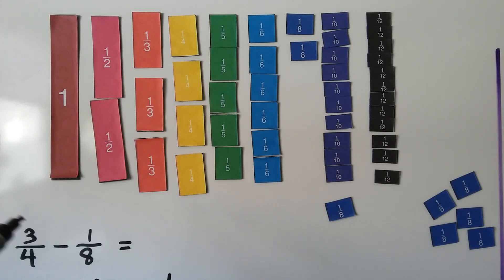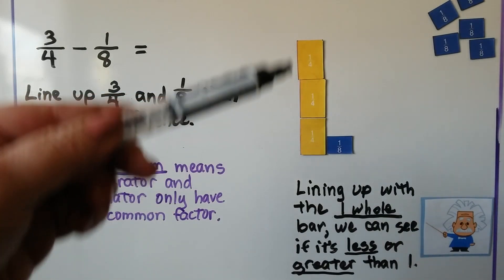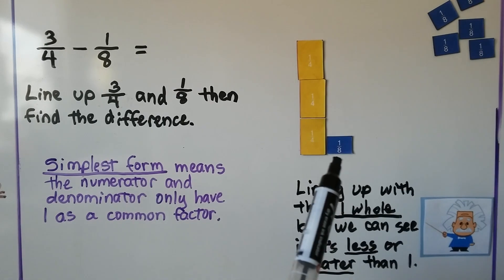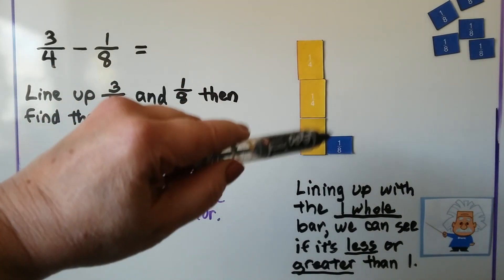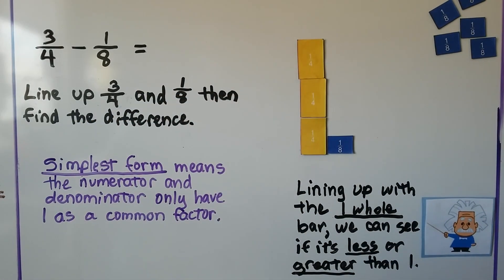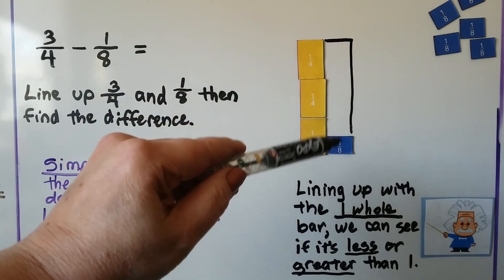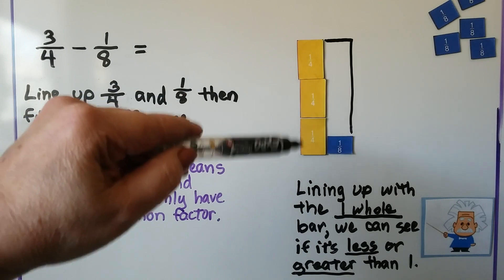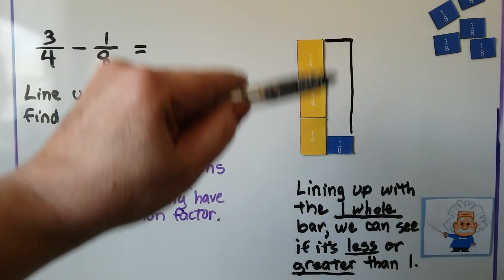We can model three fourths minus one eighth. What we do is take three one-fourth pieces — three fourths — and we line it up next to a one-eighth piece, put it right on the side. That means we're looking for this section right here to make it equal. We need to find the fraction pieces that will fill this empty space so we can find the difference between three fourths and that one eighth. This empty space, whatever it is, that's the difference.